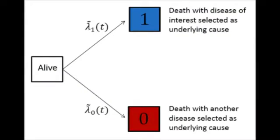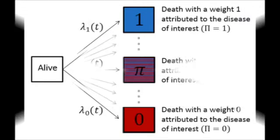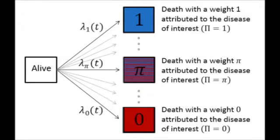Our model extends the competing risks survival model by viewing mortality as the result of a mixture of disease processes and assigning a weight to each disease mentioned on the certificate.